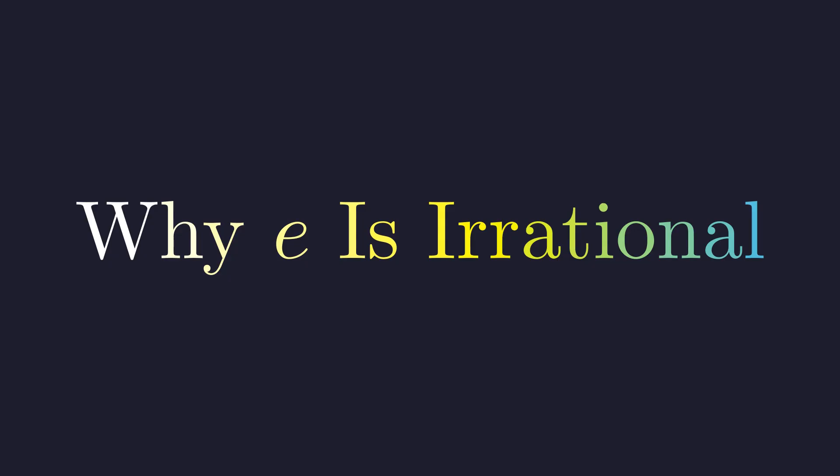Can E, that mysterious constant that shows up everywhere from compound interest to radioactive decay, can it be written as a simple fraction? It seems like it should be possible, right? After all, 2.718 and so on looks pretty ordinary.